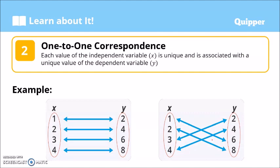Now, relations have different kinds of correspondence. First, we have what we call a one-to-one correspondence. Each value of the independent variable X is unique and this is associated with a unique value of the dependent variable Y. Meaning every X has different values, and their association to Y is also unique.